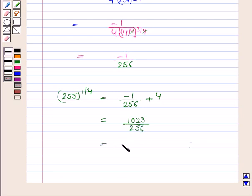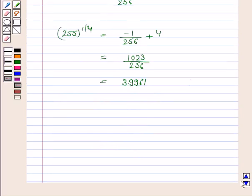And this is equal to 3.9961 approximately. So the approximate value of 255 to the power 1 by 4 is 3.9961.